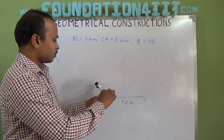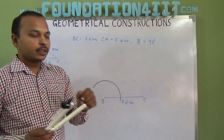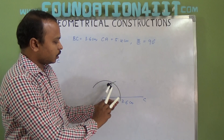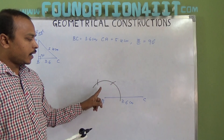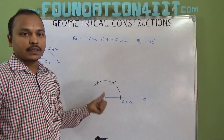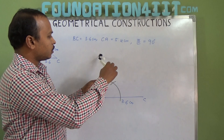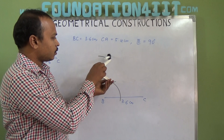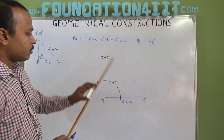Using the compass, draw an arc with some radius from point B. Without changing the radius, from that arc cut two more arcs — you will get 60 degrees and 120 degrees. Then bisect these two arcs. Take more than half arc, draw an arc from each, and the two lines will join at one point, giving you 90 degrees at B.